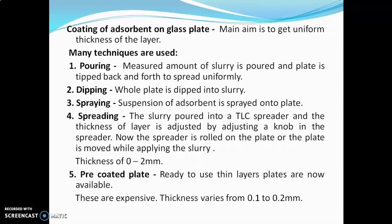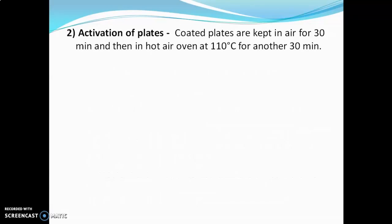Nowadays, ready-to-use pre-coated plates are available, though they are expensive. The thickness varies from 0.1 to 0.2 mm. The next step is activation of plates. The coated plates are kept in air for 30 minutes and then in a hot air oven at 110°C for another 30 minutes. Activation means drying of the plate. The plate should be completely dried before use, because if the plate has moisture, the analysis will go wrong and the spots will get spread.